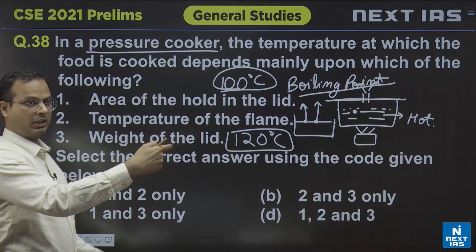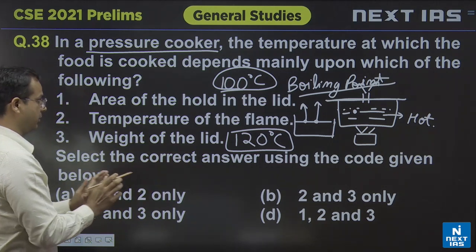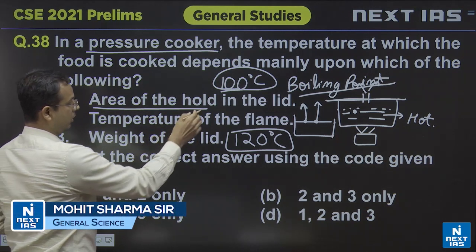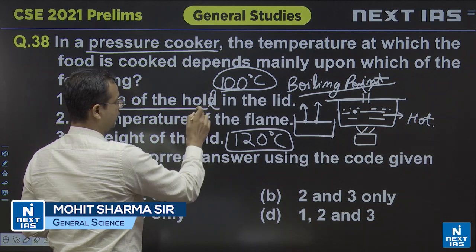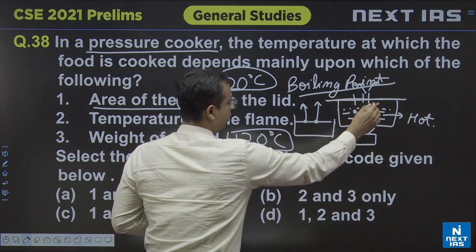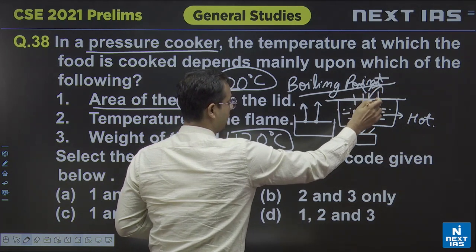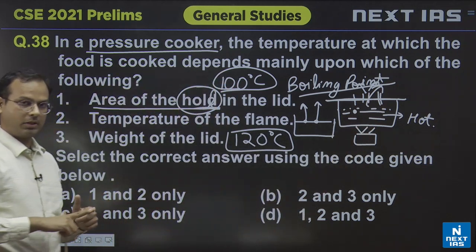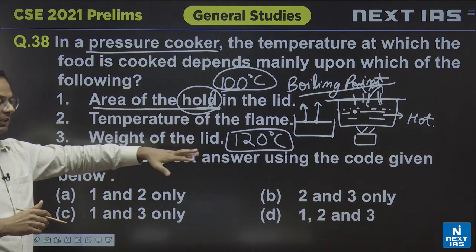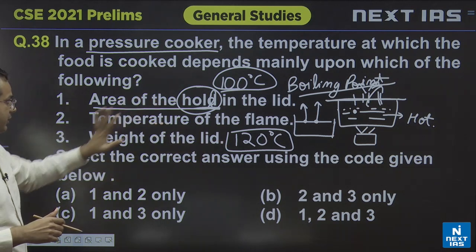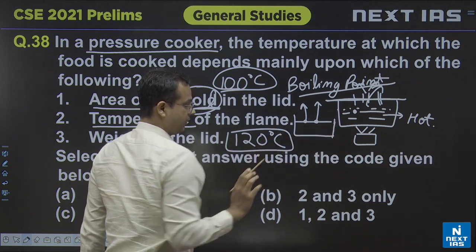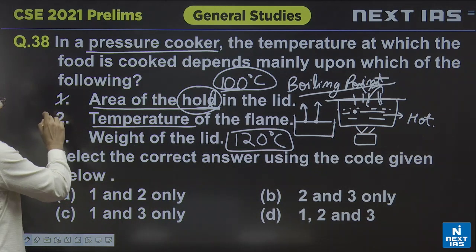By increasing the temperature you can cook food faster, which reduces cooking time. The area of the hole in the lid is important — if you increase the size of the hole, more molecules can come out easily; if you reduce the size, molecules cannot come out easily, so pressure and temperature inside increase. This is one factor. Obviously, the temperature of the flame is also a factor — if the flame has higher temperature, the cooking temperature will also be high. So statements 1 and 2 are absolutely correct.